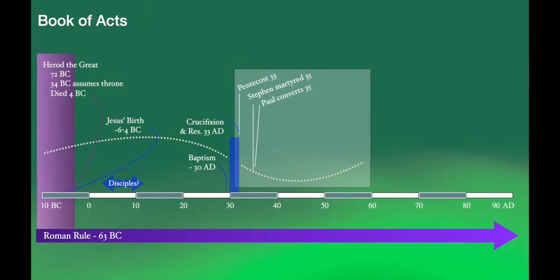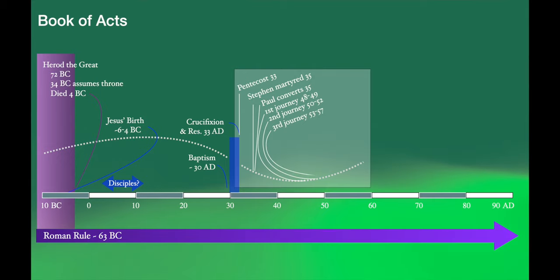Almost half of the Book of Acts is devoted to Paul's missionary journeys. Paul's first missionary journey probably occurs between 48 to 49 AD, the second from 50 to 52 AD, and his third journey from 53 to 57 AD. I need to add a caveat: these dates are approximate and can vary by a few years on either side. We try to determine these dates by doing detective work, looking for clues in the text. I would encourage you to take my timeline and modify it for yourself, and I'll have a link below to a Dropbox where you can download it.